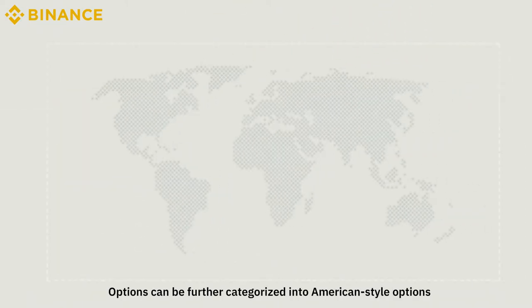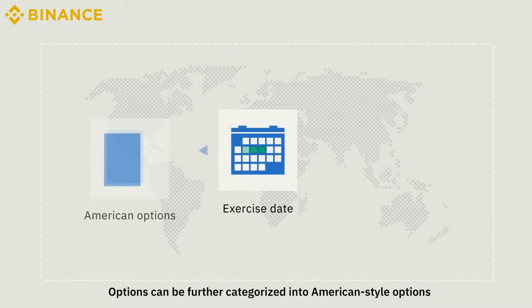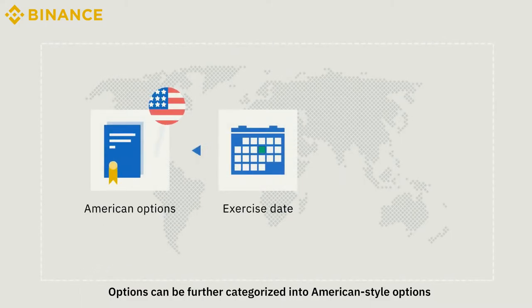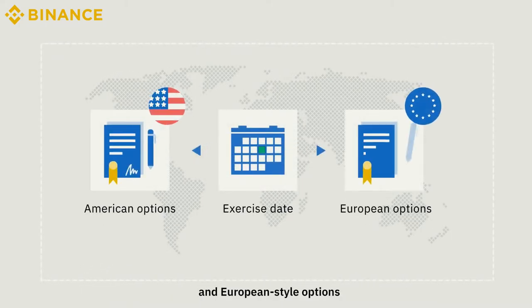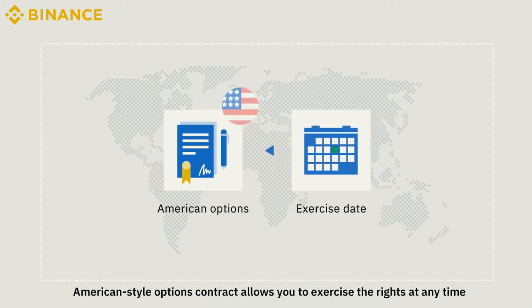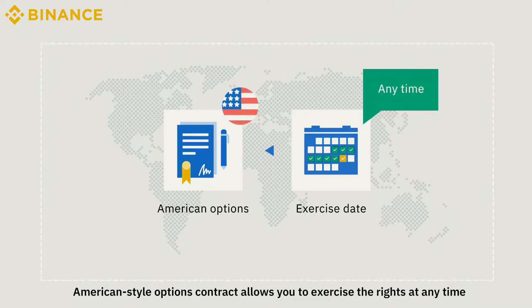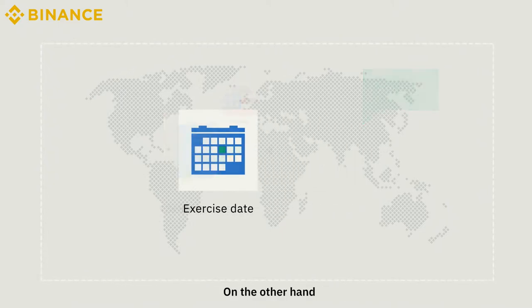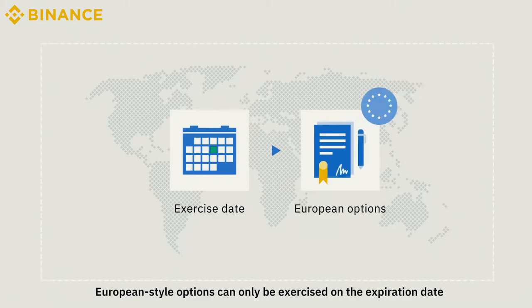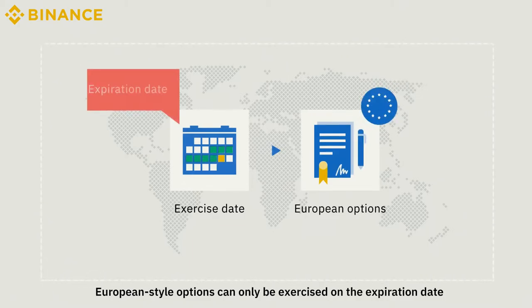Options can be further categorized into American-style options and European-style options. American-style options contracts allow you to exercise the rights at any time before and including the date of expiration. On the other hand, European-style options can only be exercised on the expiration date.